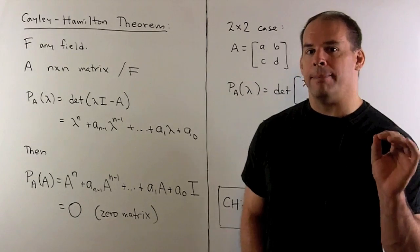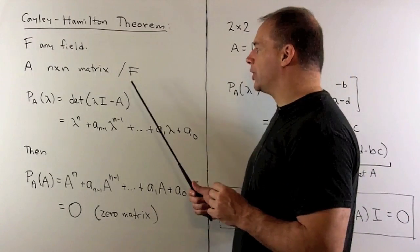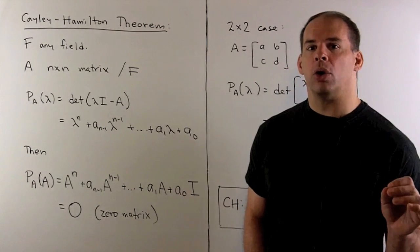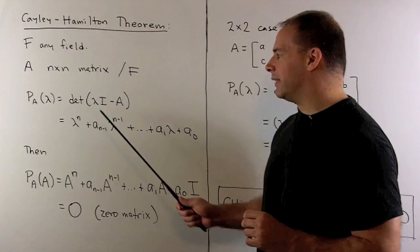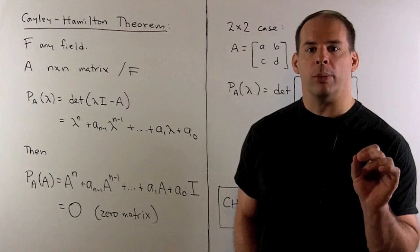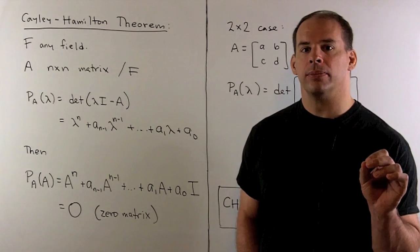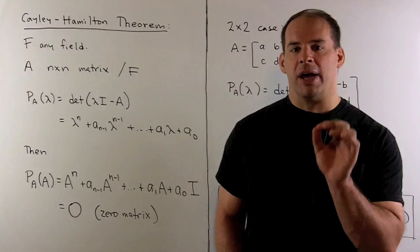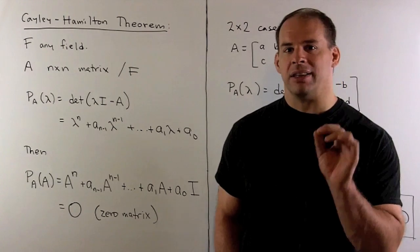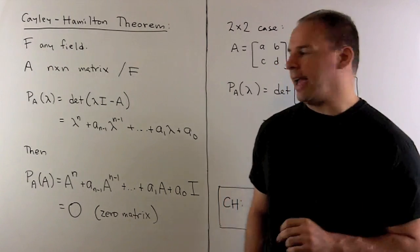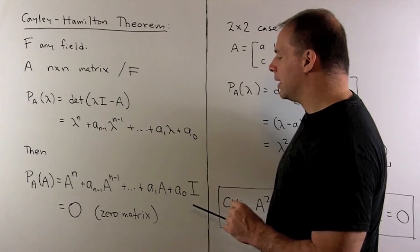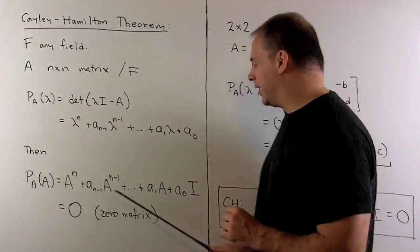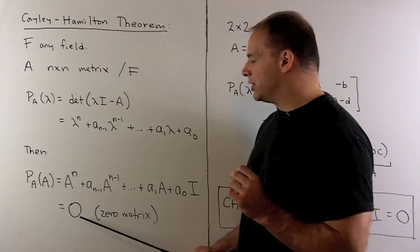We let A be an n-by-n matrix with entries in our field. We form the characteristic polynomial, so we take determinant of lambda I minus A, gives us a polynomial degree n. We regard our polynomial as a matrix polynomial by replacing lambda with A, multiplying A0 by the identity matrix. Then the Cayley-Hamilton Theorem states that this polynomial in A is going to be equal to the 0 matrix.